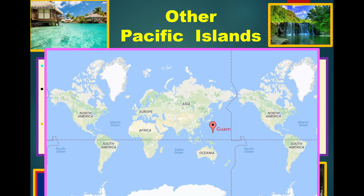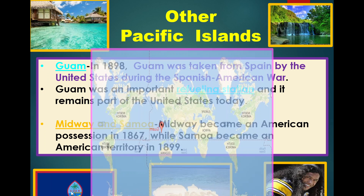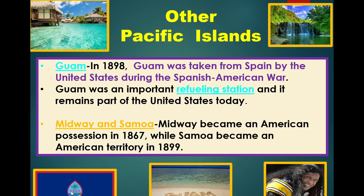Guam is another Pacific island the United States takes during this time period, as a result of the Spanish-American War. In 1898, Guam is taken from Spain by the United States during the Spanish-American War. Guam was an important refueling station and remains part of the United States today. During this time period, the U.S. also pushes into the Midway and Samoa region, taking Midway and Samoa as well.